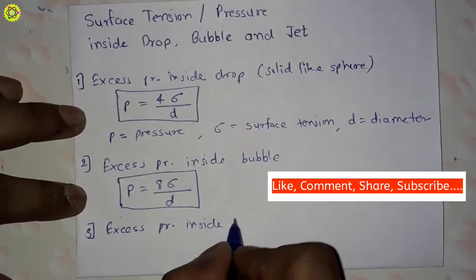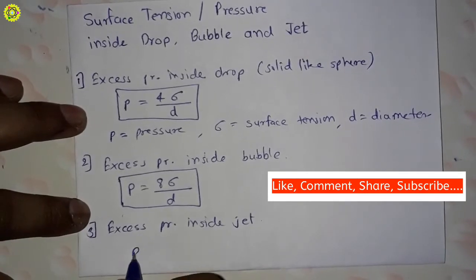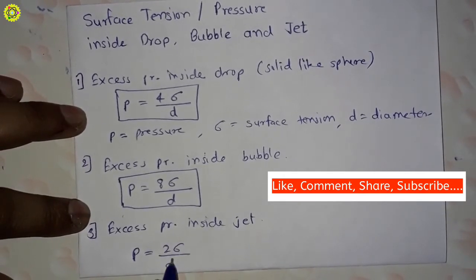Third is excess pressure inside jet—water jet. For this, P = 2σ/d.